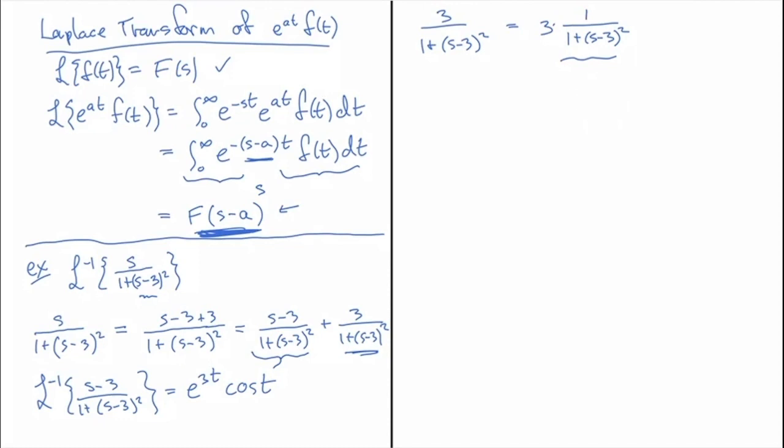So now I could just write down the inverse transform of 3 over (1 plus (s minus 3) squared) is going to be 3 multiplied by, by linearity, e to the three t times the sine of t.